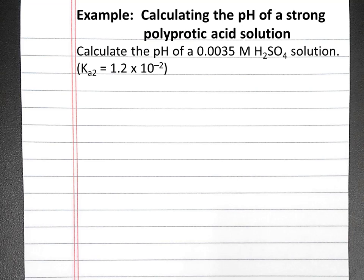In this example problem, we'll calculate the pH of a strong polyprotic acid solution. Our solution is a 0.0035 molar sulfuric acid solution. The second association constant for sulfuric acid is given.